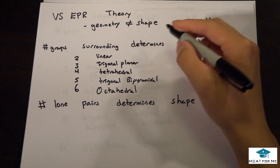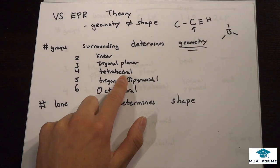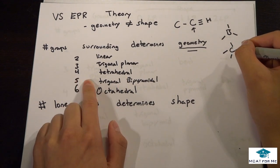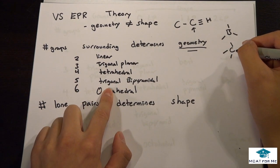Now let's look at something like this: three groups around the boron, so it would be trigonal planar. Four groups around the carbon - tetrahedral. Five is trigonal bipyramidal, six is octahedral.